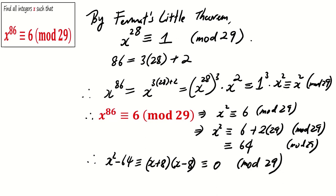As such, x ≡ -8 or x ≡ 8 (mod 29). Finally, x ≡ 21 or 8 (mod 29).